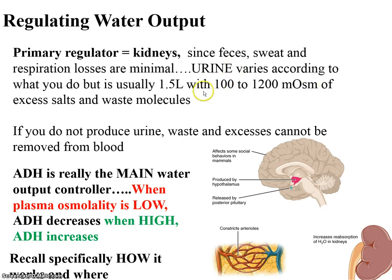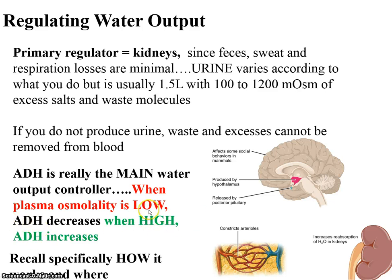This range reflects what you're doing. If you've been drinking a lot of water, concentration will be low; if you haven't, it will be very high. Urine consists of excess salts, waste materials, and water. If you do not produce urine, waste and excesses cannot be removed from the blood — you have toxic waste circulating in your body. ADH is really the main water output controller. When plasma osmolality is low — meaning plasma is dilute — ADH decreases. When plasma osmolality is high, ADH increases, working on the collecting ducts to bring back more water.